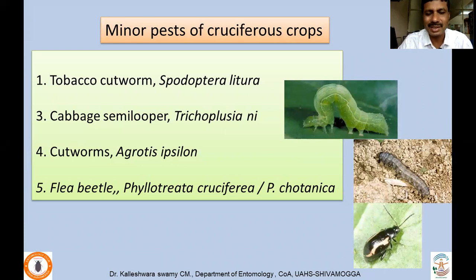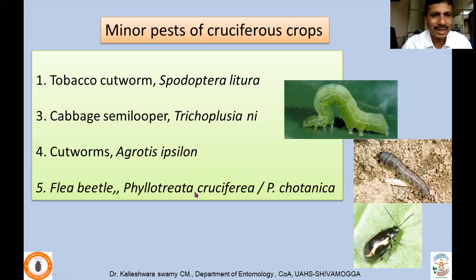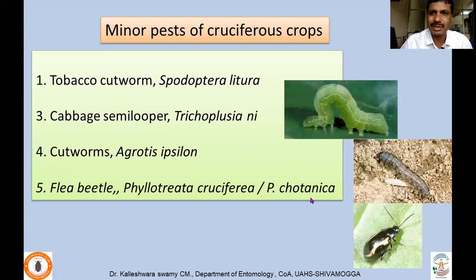Those are the major pests of cruciferous crops. Minor pests include Spodoptera litura, the tobacco cutworm, which also attacks some cruciferous crops as it is highly polyphagous. The Cabbage Semi-looper, Trichoplusia ni, Cutworm Agrotis ipsilon — again a very serious polyphagous pest, active at night. Flea beetles such as Phyllotreta cruciferae, Phyllotreta chotanica, and Monolepta cygnata, belonging to family Chrysomelidae, also attack cruciferous crops, though in most parts of India they are considered minor pests.